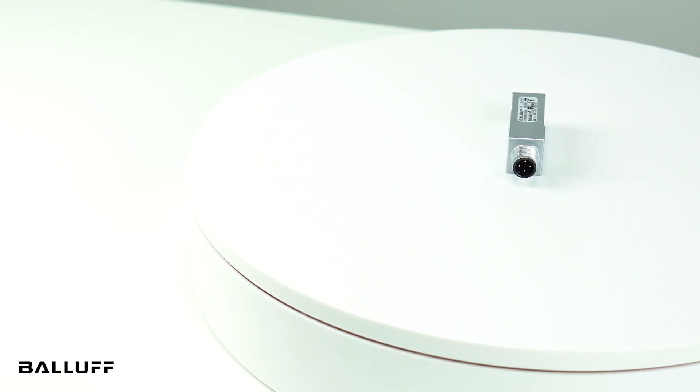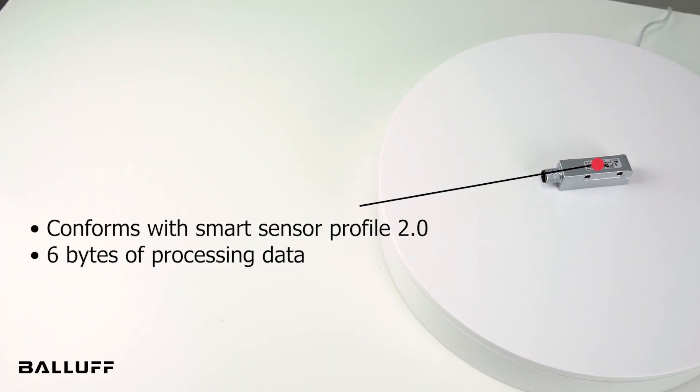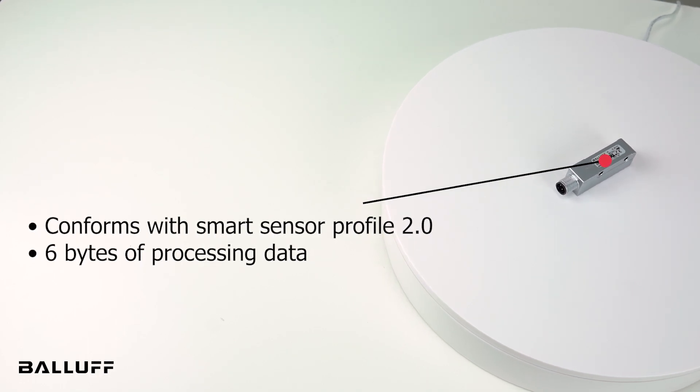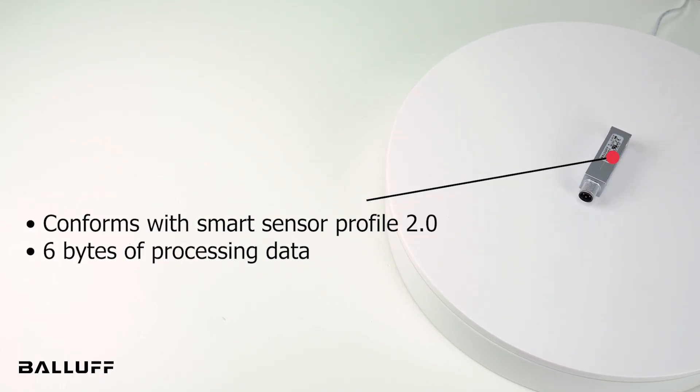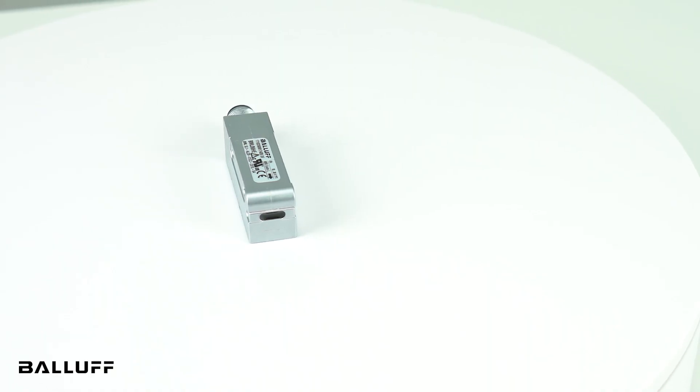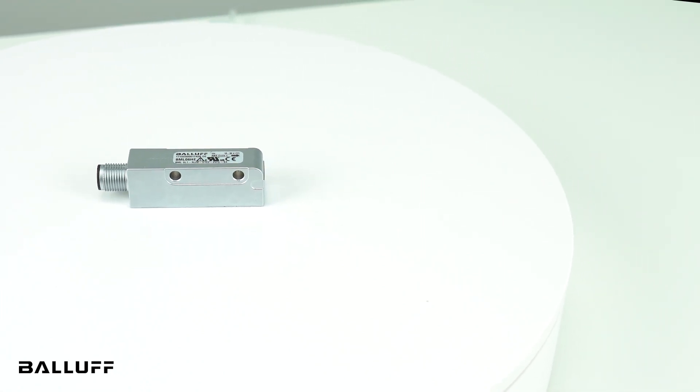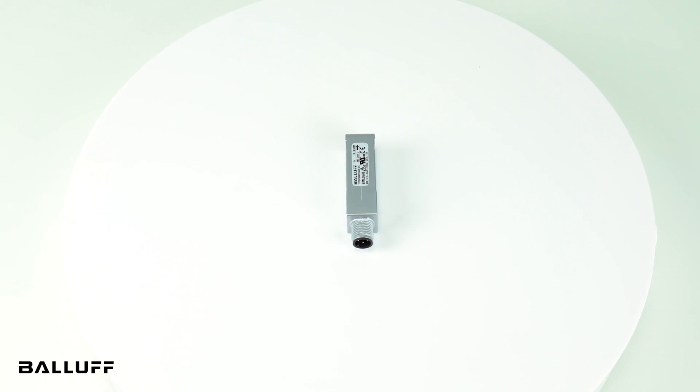Our newest models meet IO-Link's smart sensor profile 2.0 specifications, which adds four switching signal channels to the process data. Each channel uses IO-Link to program an on and off point for the encoder, allowing you to limit the measurement to certain ranges or windows. The encoders send two additional bytes of processing data to support the switching signal channels. Without this, you would need to use additional sensors to set these limits.